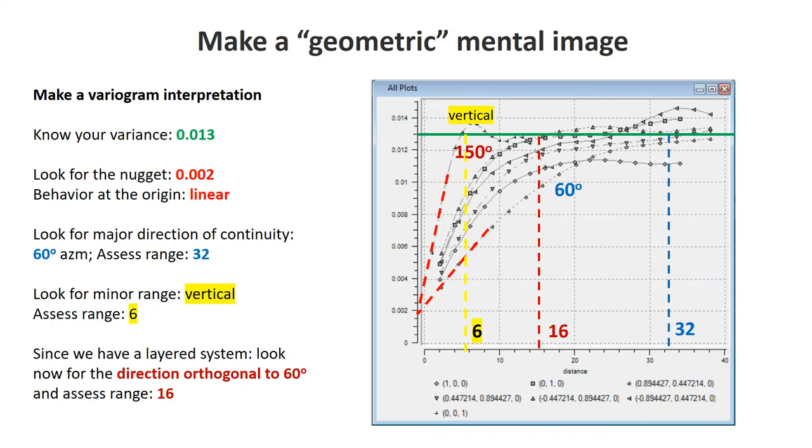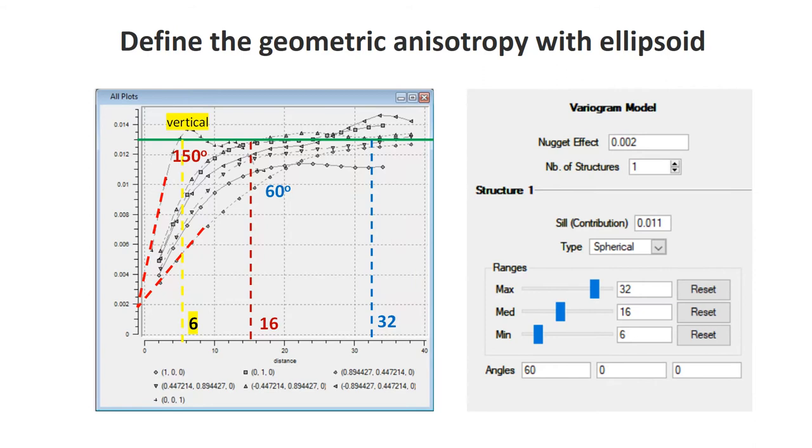That's kind of it in terms of what we need for interpretation. If we go to SGEMS next, we can start inputting all that information. Again, you do the same order: look at variance and nuggets. The nugget effect is 0.02. Number of structures refers to nesting, which we talked about in class. There's no clear nesting here - you would see kinks in variogram structures. We have one structure with a contribution of variance minus nugget, which is 0.011. That linear behavior is spherical.